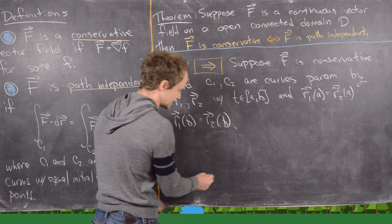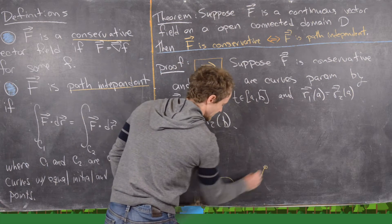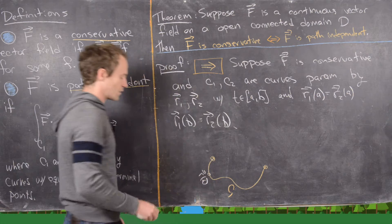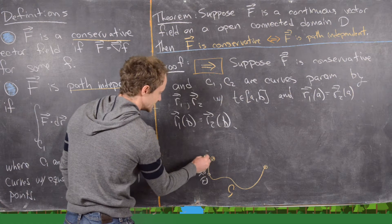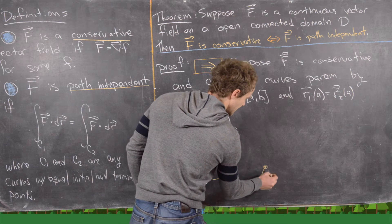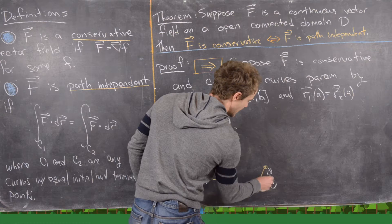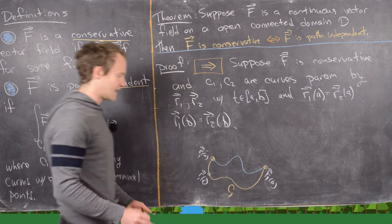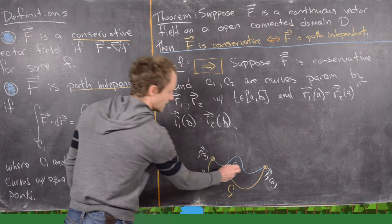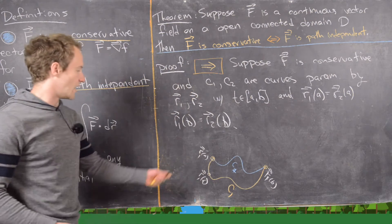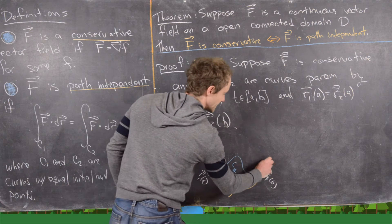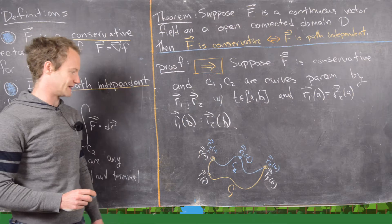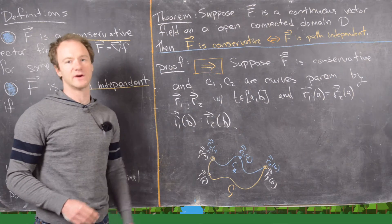To picture this: C1 is the yellow curve where every point is r1(t) for t running from a to b. The initial point is r1(a) and the terminal point is r1(b). The blue curve C2 has the same initial point r2(a) and terminal point r2(b), but different intermediate points — same endpoints, different middle paths.